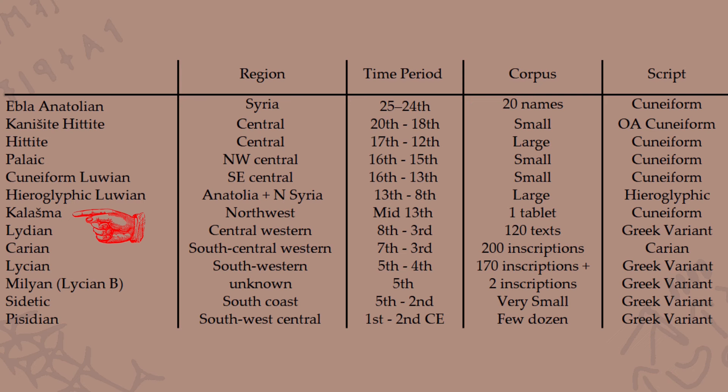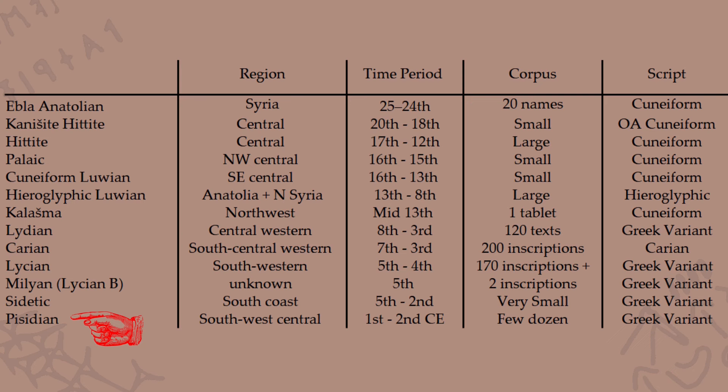We have the Carian Anatolian language, attested in some 200 inscriptions, mainly personal names, graffiti, and coin legends. We also have Lycian, quite a useful Anatolian variant because we have a rather deep understanding of it due to some bilingual texts — all in all, 170-plus inscriptions. I'd also like to draw attention to Pisidian, the final Anatolian language in the table, attested only in personal names — similar to the Anatolian from the Ebla archives. It's the latest attested Anatolian language, from the 1st to 2nd centuries CE, and its placement on the Anatolian tree is difficult to determine with any degree of accuracy.